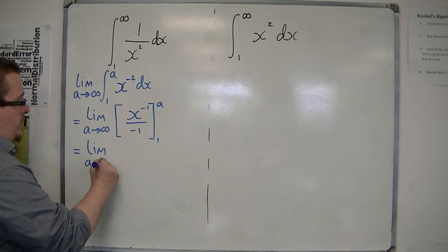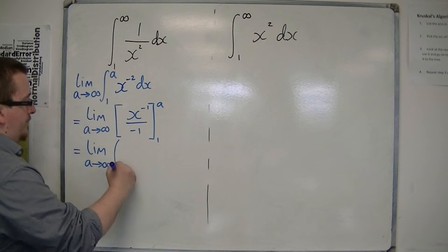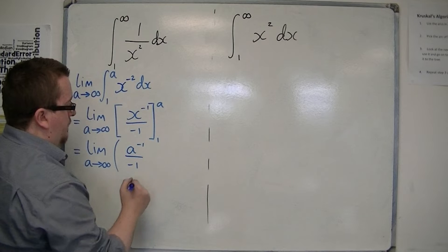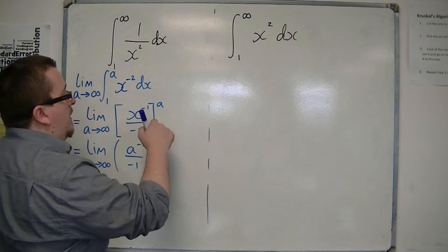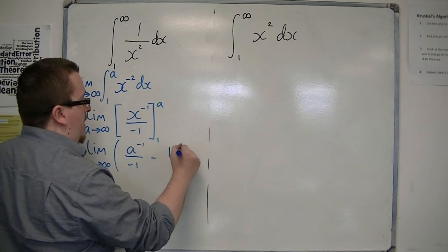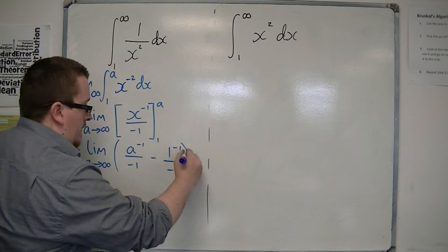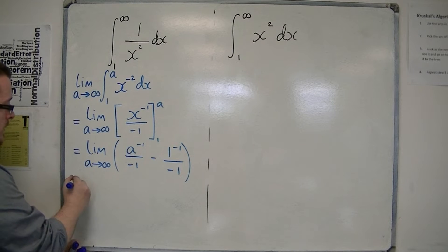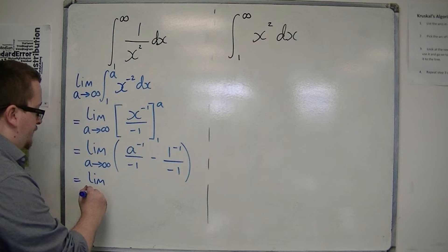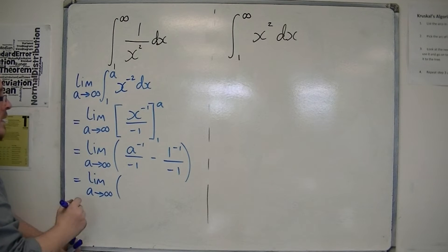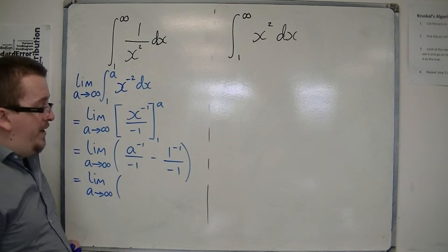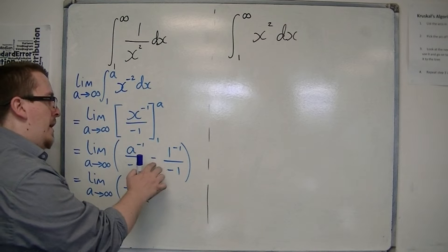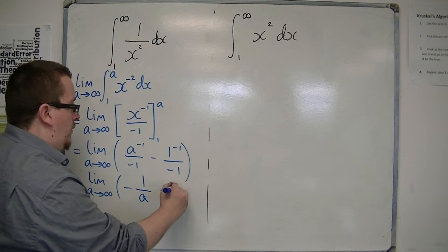This is the limit as a tends to infinity of a to the minus 1 over minus 1, take away 1 to the minus 1 over minus 1. You substitute in a first, then take away, substituting in 1. Let's tidy this up: a to the minus 1 over minus 1 is minus 1 over a. And minus and minus becomes a plus, so plus 1.